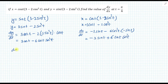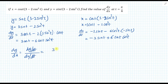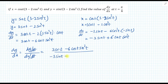To get dy/dx, I divide dy/dt by dx/dt. So dy/dx equals (3 cos(t) minus 6 cos(t) sin squared t) divided by (minus 3 sin(t) plus 6 sin(t) cos squared t).